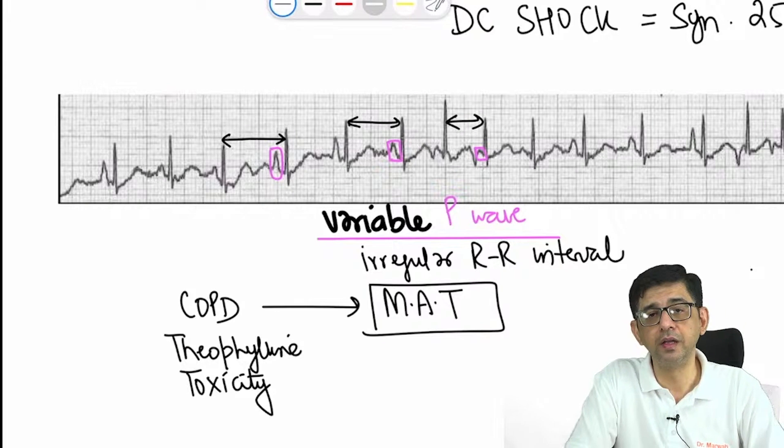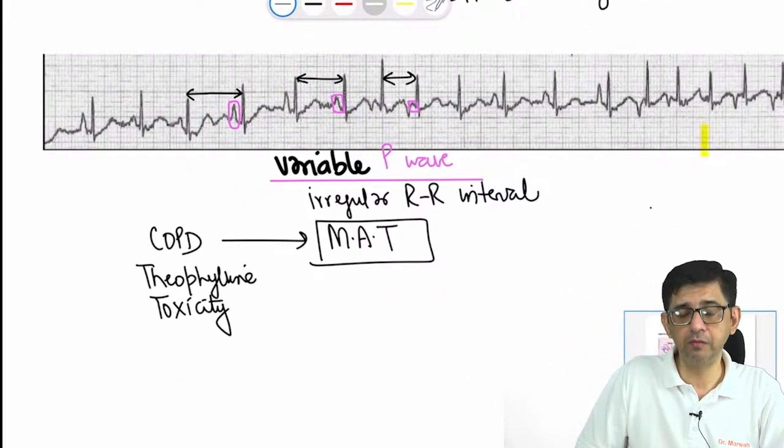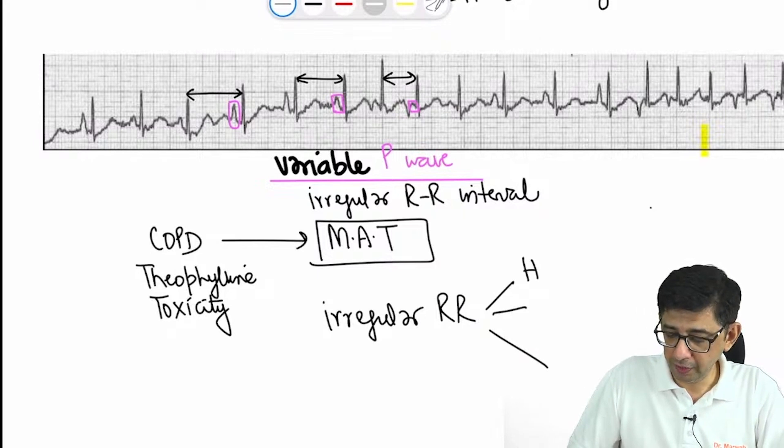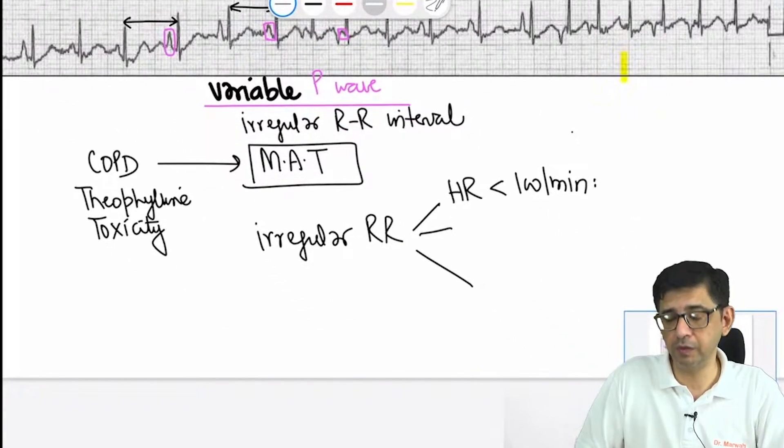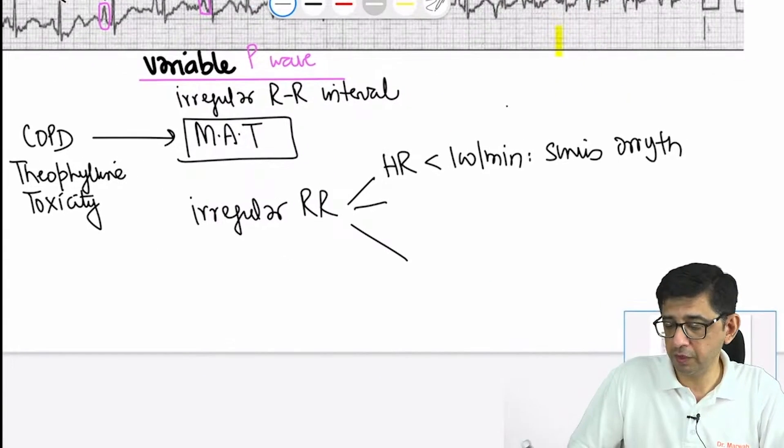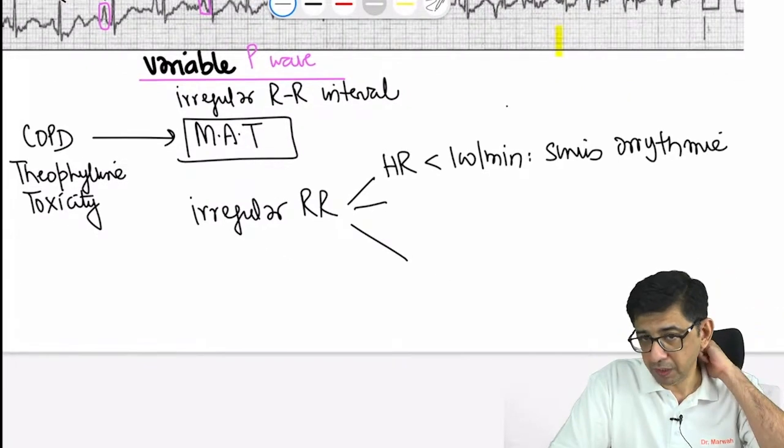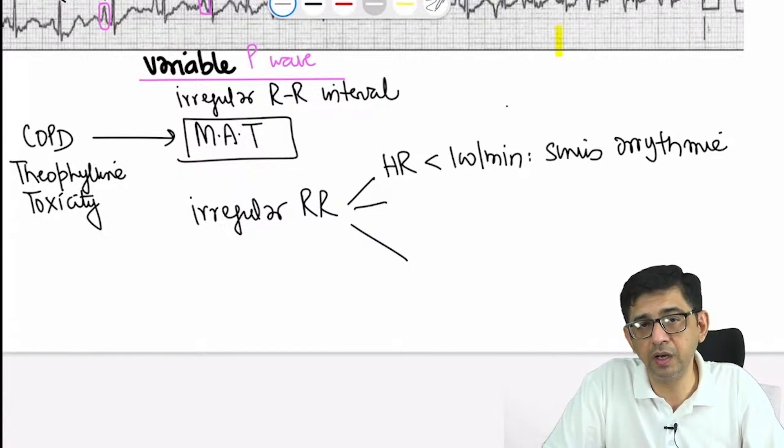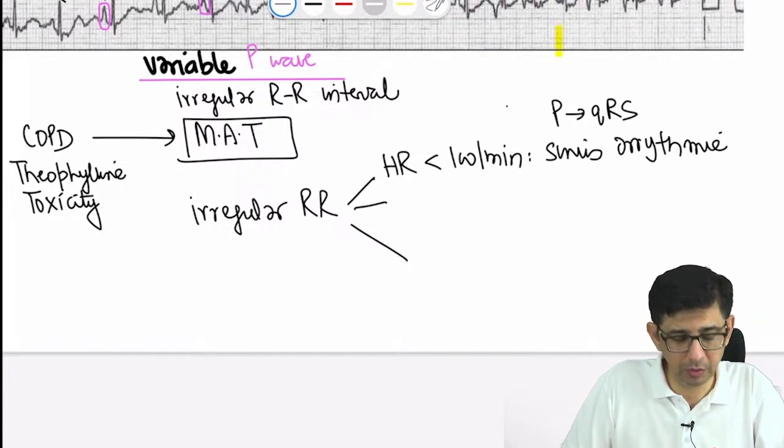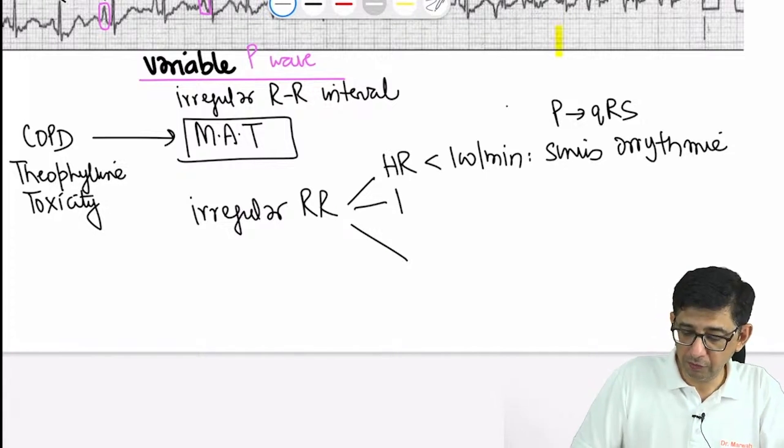Every time you get a question on irregular RR interval, three things are to be considered. If the heart rate is normal and there's irregular RR interval, you'll simply say sinus arrhythmia. Our RR interval can change because when we breathe in and out, our vagus nerve discharge changes. If you're getting irregular RR and heart rate is less than 100, it's sinus arrhythmia. Obviously, every P wave should be followed by a QRS complex. But if heart rate is more than 100.